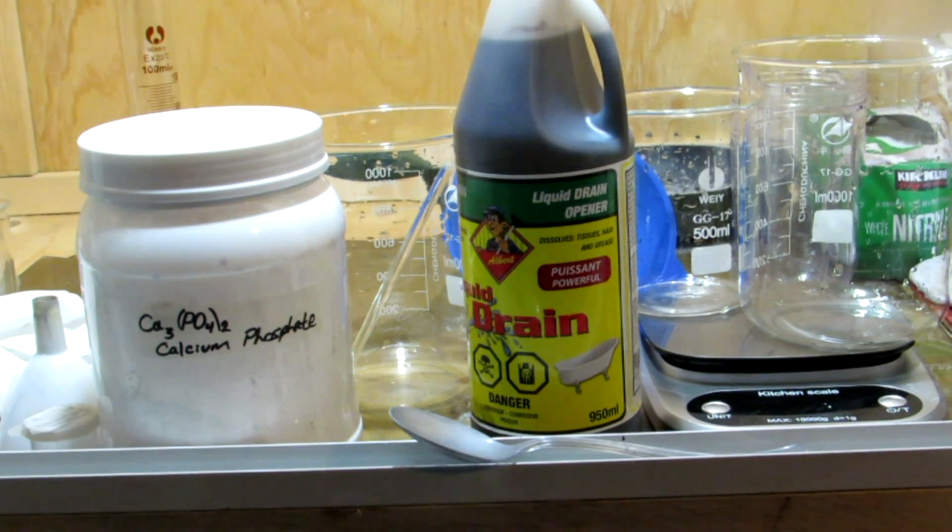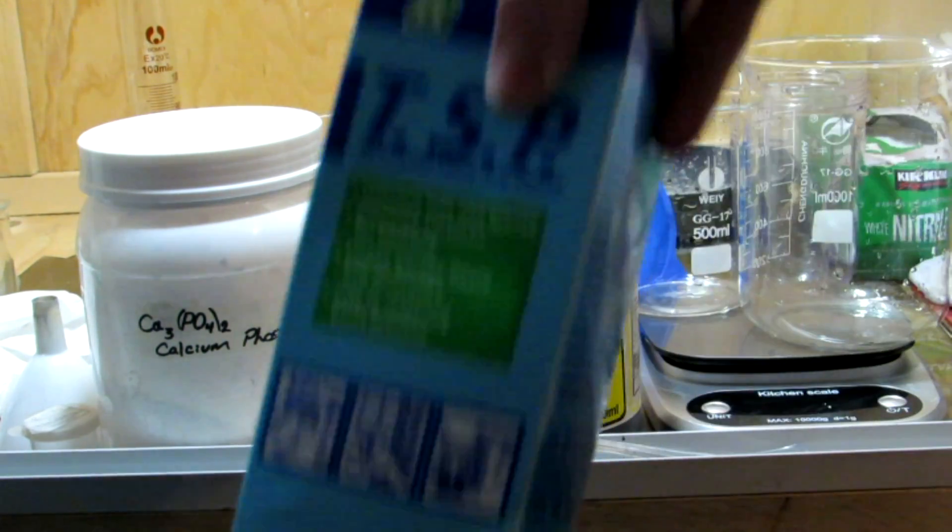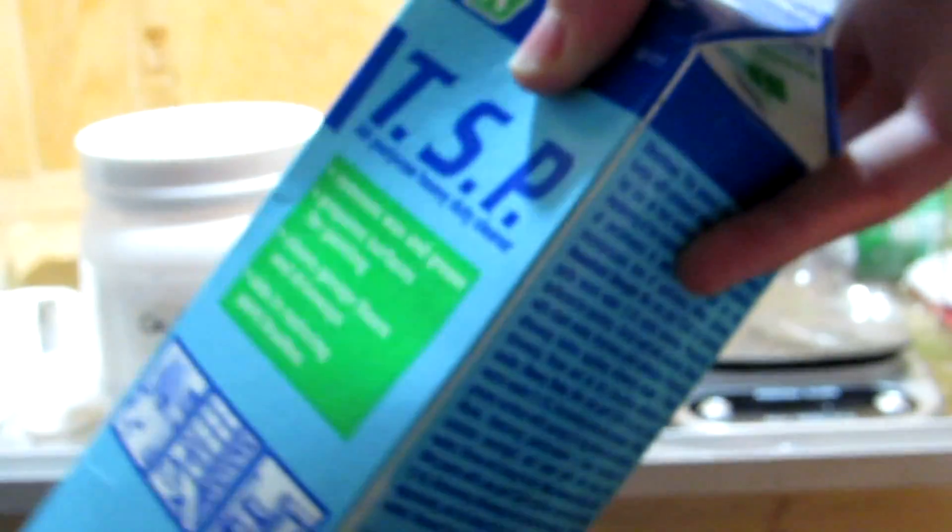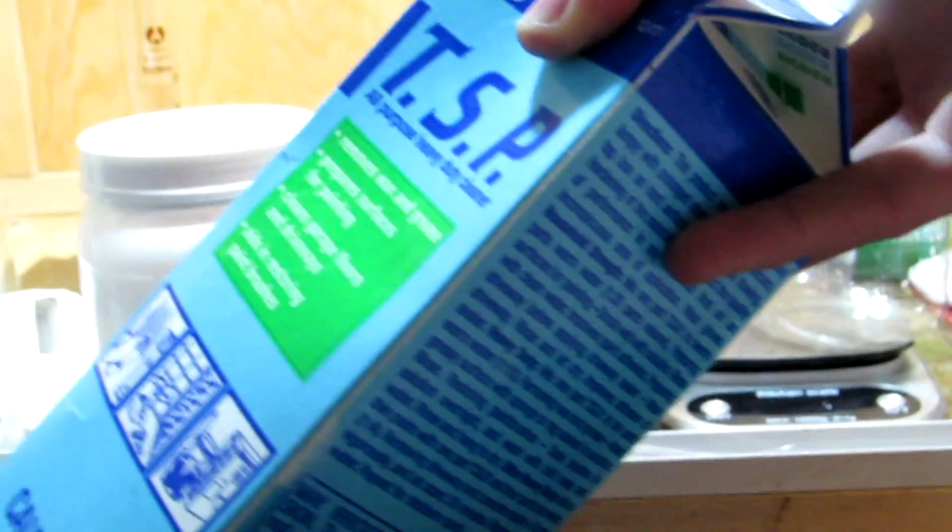Sodium hydroxide can be purchased at hardware stores such as Home Hardware and sold as lye, and you can also find it in some drain cleaners. Calcium phosphate can either be purchased from a pottery supply store or you can make it yourself from trisodium phosphate, which is TSP cleaner, and calcium chloride.